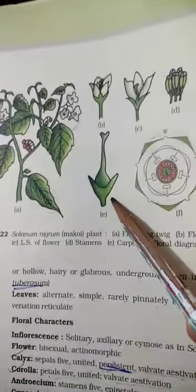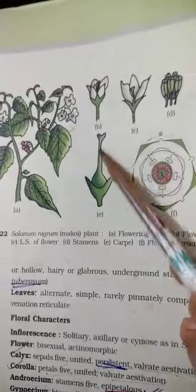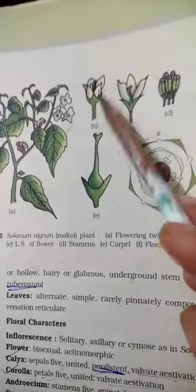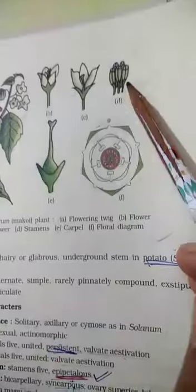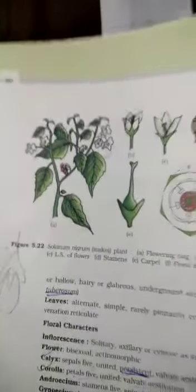Here they have shown the pistil. This is ovary, style, and stigma. This is the flower. These are calyx, these are petals. These are stamens, which you have seen in reality, which I have shown you in previous videos.